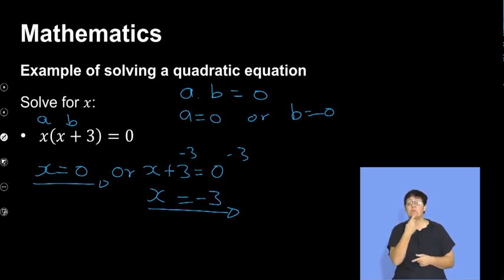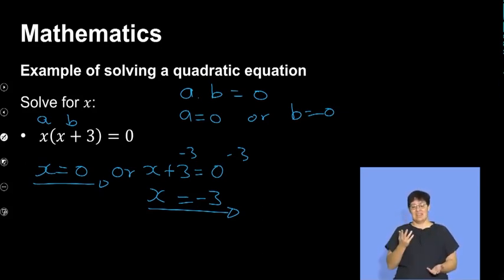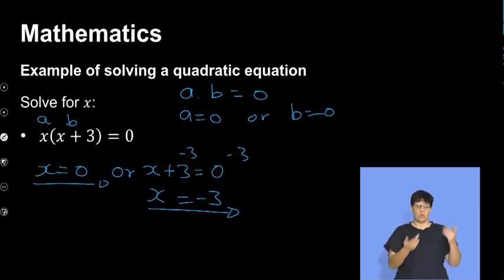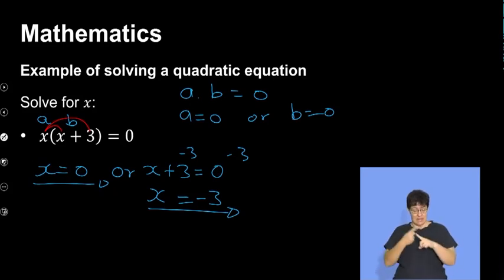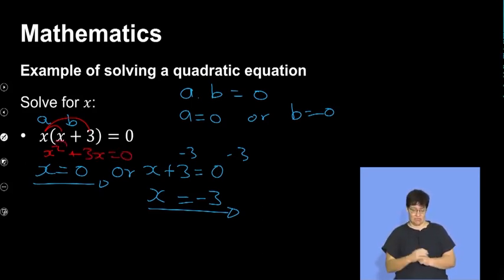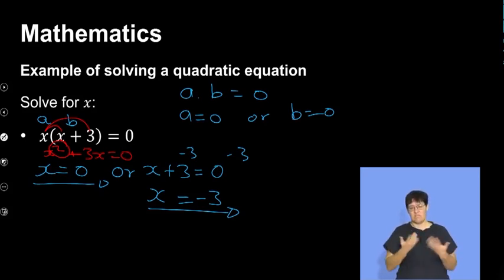Remember, because this is a quadratic equation it needs to have at most two solutions. Someone might ask how is this a quadratic equation because there is no squared. If I was to multiply out this x inside the bracket, this will give me x squared plus 3x equal to zero — you see, my squared is definitely there, just that this was already simplified for us.